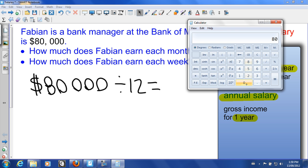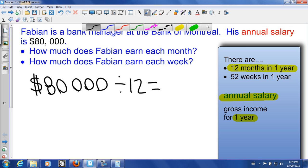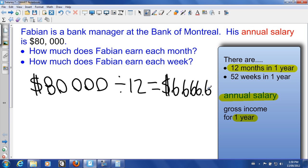$80,000 divided by 12 gives us $6,666.66 and that repeats. Now remember when we're working with money we need to always round to the nearest penny. That's two decimal places. So we're going to round that off to .67. So $6,666.67.